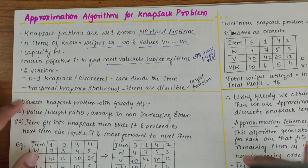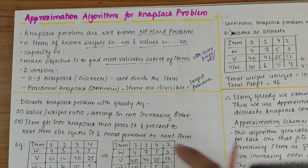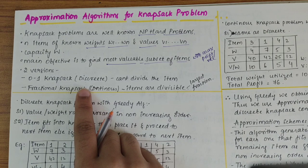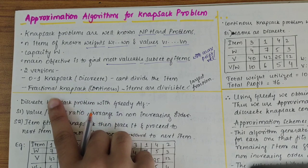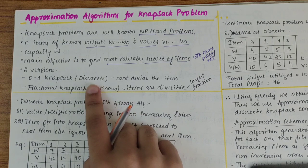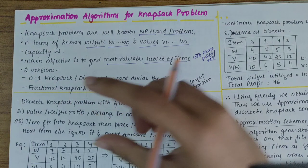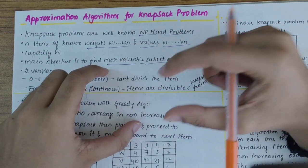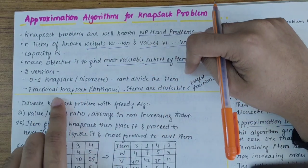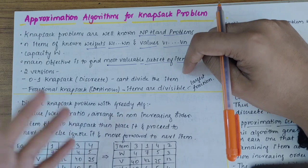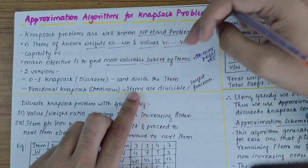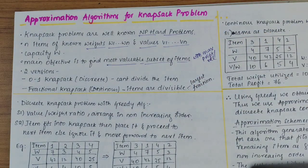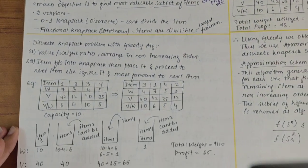There are two versions here. This knapsack problem: 01 knapsack, also called discrete knapsack, and fractional knapsack, the continuous knapsack. In discrete knapsack, either it is 0 or 1 - that particular item is considered or discarded, it cannot be divided. But in fractional or continuous knapsack, the items are divisible to largest fraction.